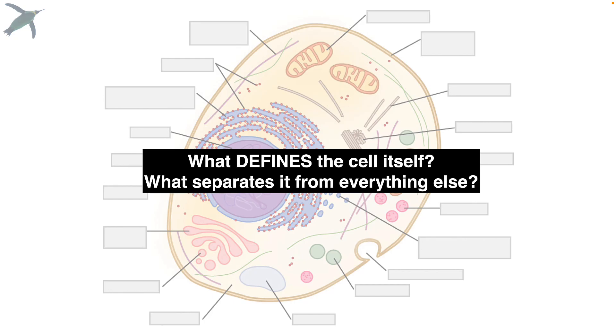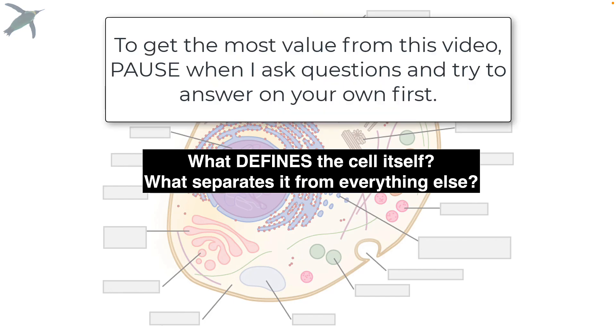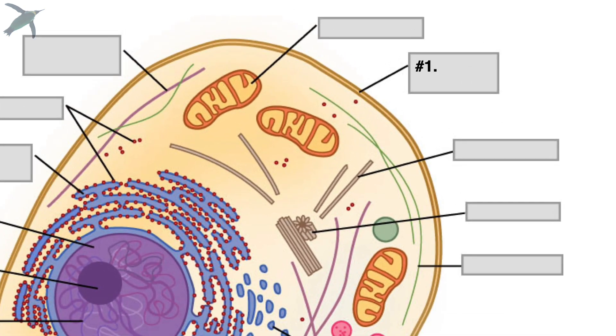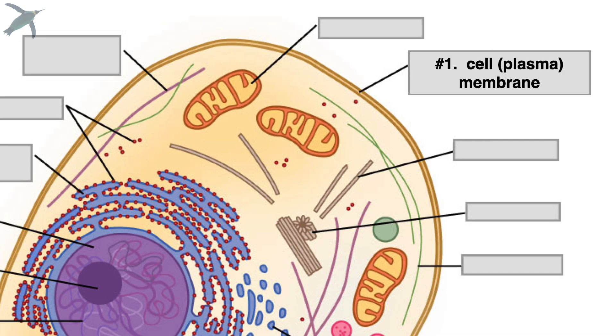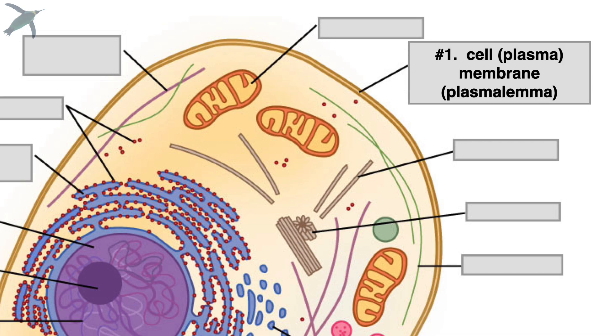Okay, first of all, what defines the cell? Like what makes it the cell as opposed to anything else in the universe? I know you know this. It's shown here with number one, referring to this boundary going all the way around. What's that called? That is the cell or the plasma membrane. You may also see it as the plasma lemma.